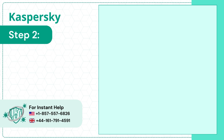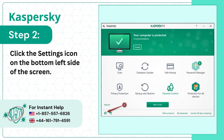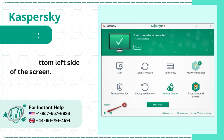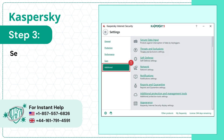Step 2: Click the Settings icon on the bottom left side of the screen. Step 3: Select Additional from the left side menu.